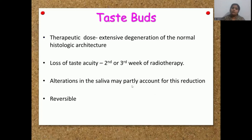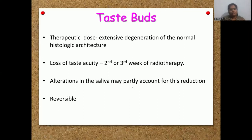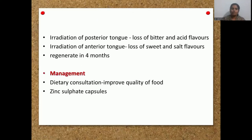Next is the effect on taste buds. When we give a therapeutic dosage of radiation during radiotherapy, there is degeneration of the normal architecture of taste buds, which can cause impaired taste sensation. Usually by the second to third week of radiotherapy, a decrease in taste sensation is noted. Alteration in saliva may also contribute, since the salivary gland is affected and the composition of saliva is changed. This damage to taste buds is reversible and can revert to normal after three to four months. When the posterior tongue is irradiated, there is alteration in bitter and acid flavour; when the anterior tongue is irradiated, there is loss of sweet and salt flavours.